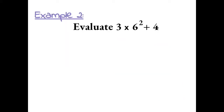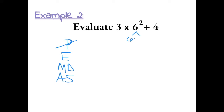Example 2: Evaluate the expression. Let's use PEMDAS, order of operations, to evaluate this expression. We don't have any parentheses, so we can start with exponents. Our only exponent is 6 squared, which is 6 times 6. This gives us 36. Now we can bring everything else down: 3 times 36 plus 4.